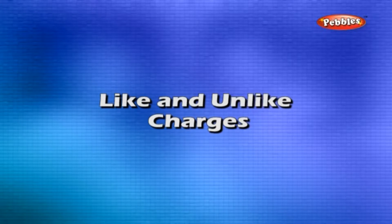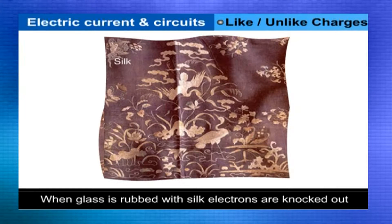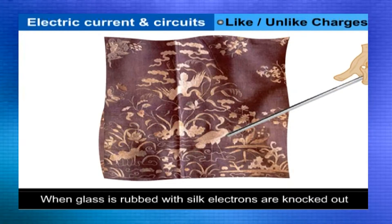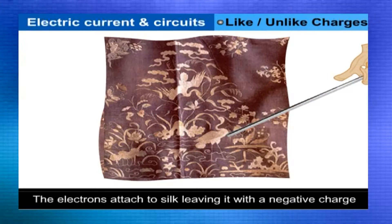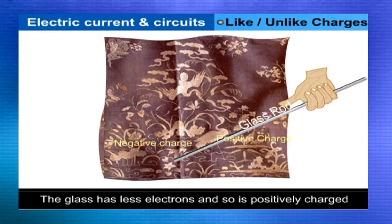Like and unlike charges. When glass is rubbed with silk, electrons are knocked out of glass. These electrons attach themselves to silk, leaving it with a net negative charge. The glass has fewer electrons now and so is positively charged.